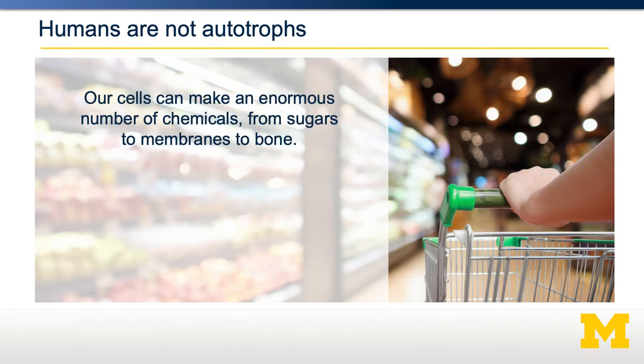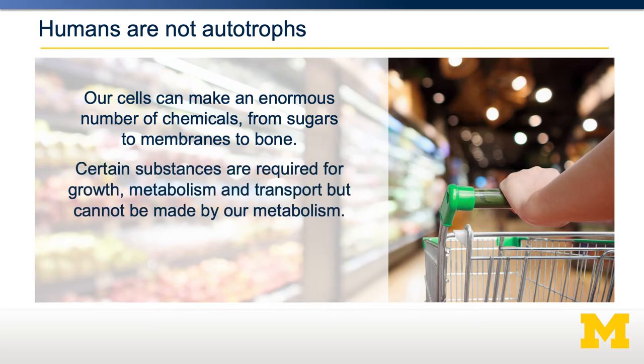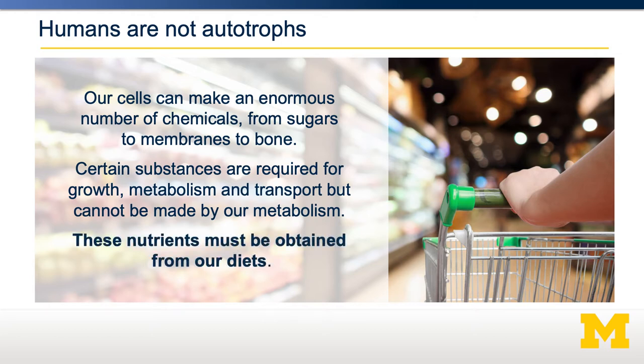Our bodies can make an enormous number of chemicals, ranging from sugars to biological membranes, to bone, to skin. However, certain substances are required for our growth, metabolism, and transport, and some of these cannot be made by our endogenous metabolism. We just do not have the enzymes to make some of these substances. Therefore, these nutrients must be obtained from our diets, and are considered essential nutrients.